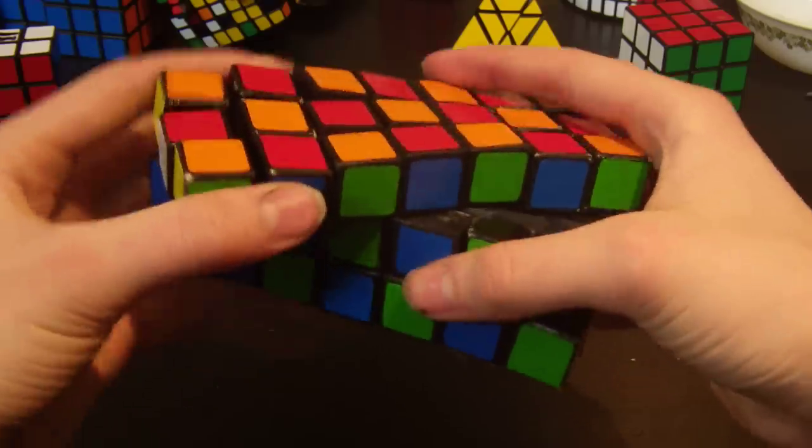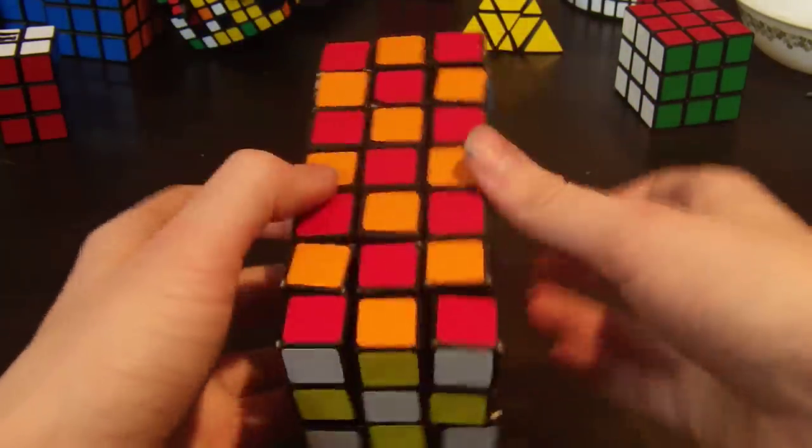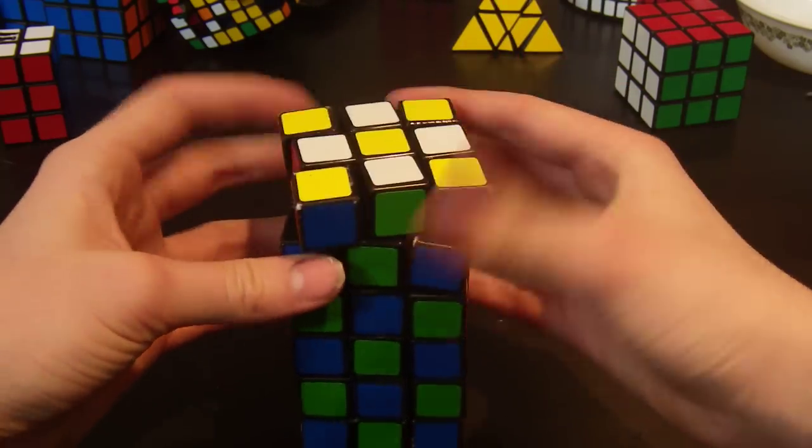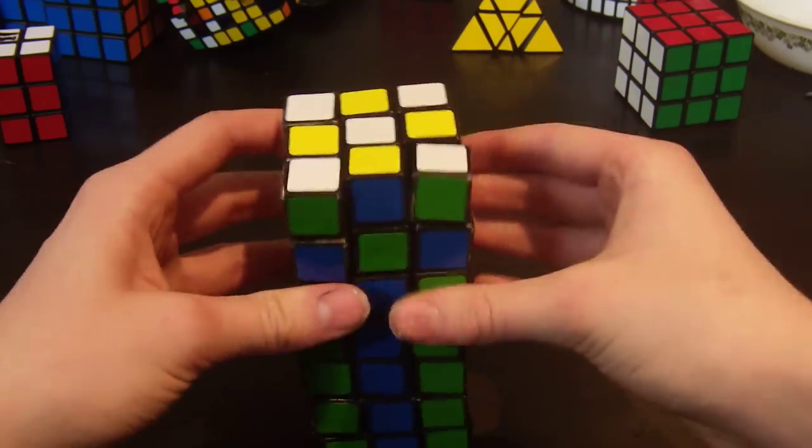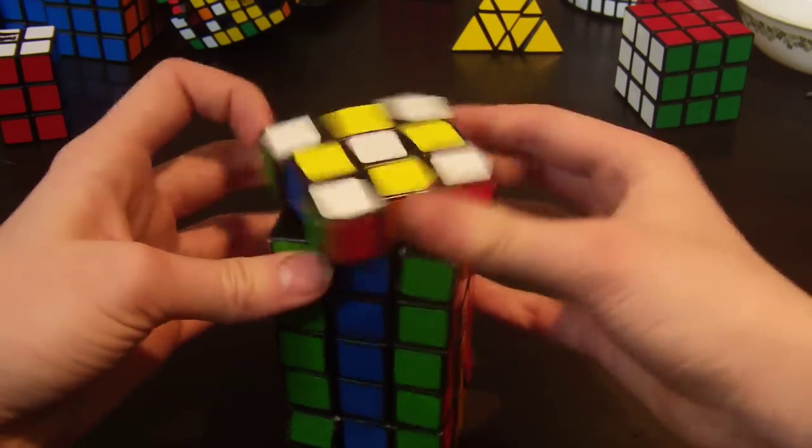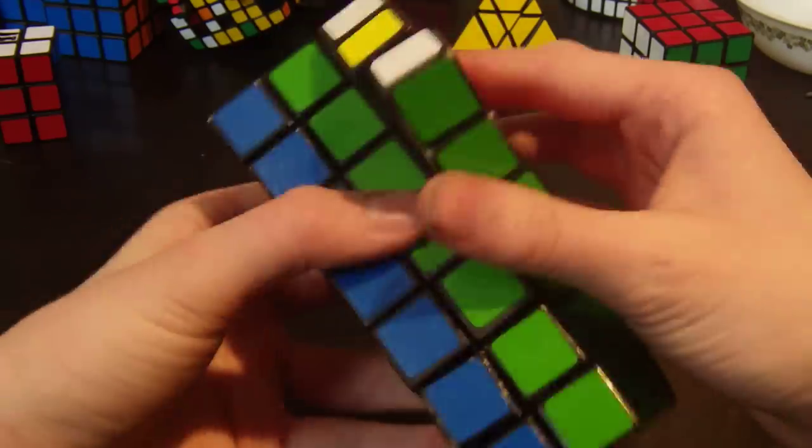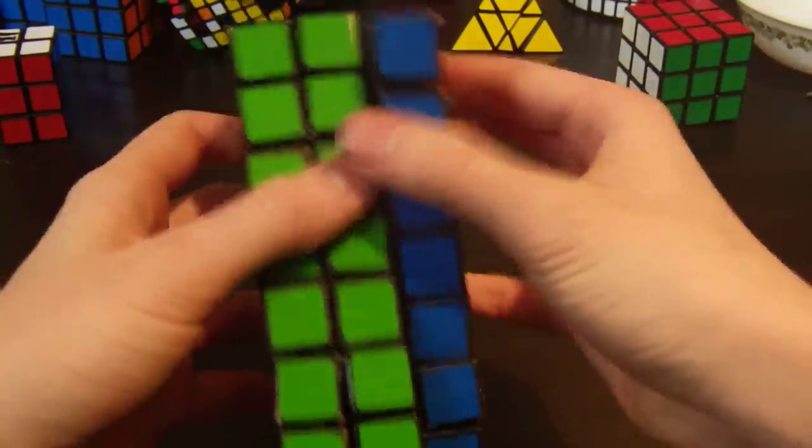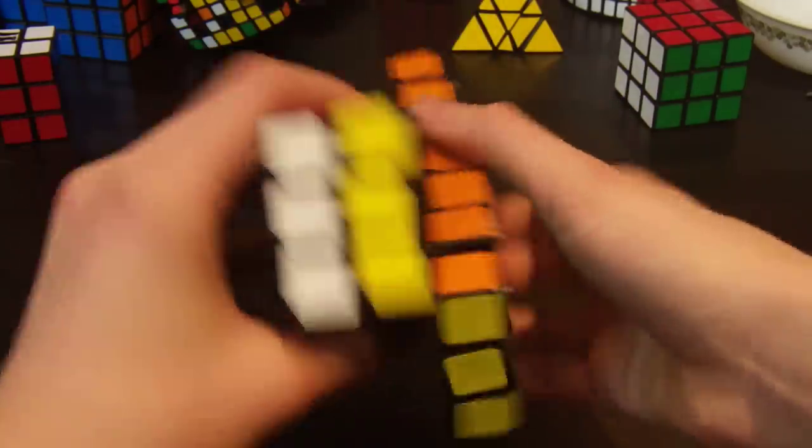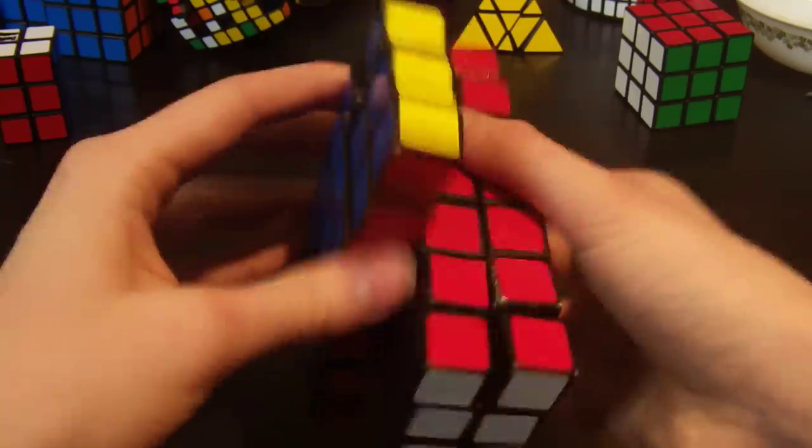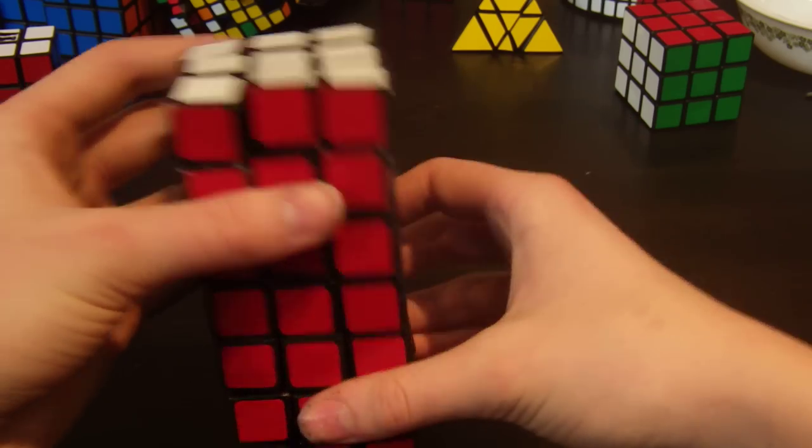This puzzle does have some issues of stability. You can kind of see the internal workings of this puzzle here, but I'll go into the mechanism a bit more in detail in a minute. So that is the checkerboard pattern. As you can see, this puzzle is not very stable. But it is fully functional or you would not be able to do that. You can see uncheckering that went a lot better. I don't know why, but it did.